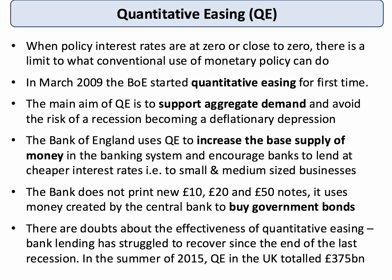In this short topic video, we'll look at how QE works and what the arguments are for and against it. The essence of QE is that the Bank of England uses QE as an asset purchase scheme. They increase the base supply of money in the banking system, hoping that interest rates will fall to encourage lending to small and medium-sized businesses.